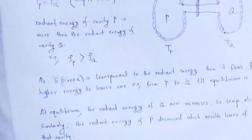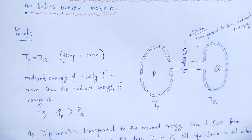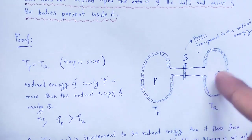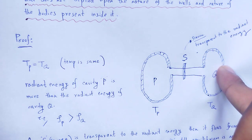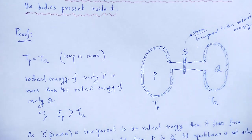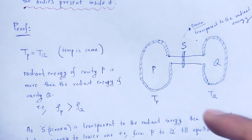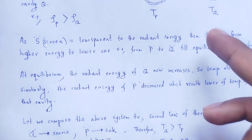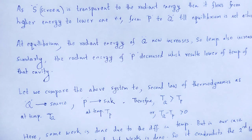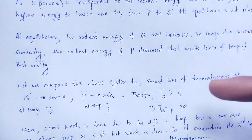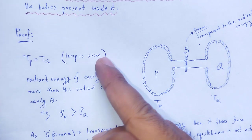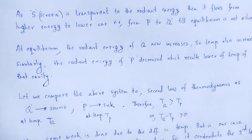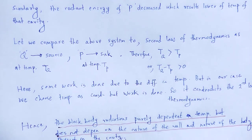It is proved by considering two cavities P and Q made of different materials but at the same temperature. The radiant energy of one is more than the radiant energy of the other. A screen S, transparent to radiant energy, is placed between them, and radiant energy flows from higher to lower. This leads to a temperature difference, which contradicts the second law of thermodynamics when temperatures were initially equal. Therefore, blackbody radiation is purely dependent on temperature, but not on the nature of the body present inside the cavity.